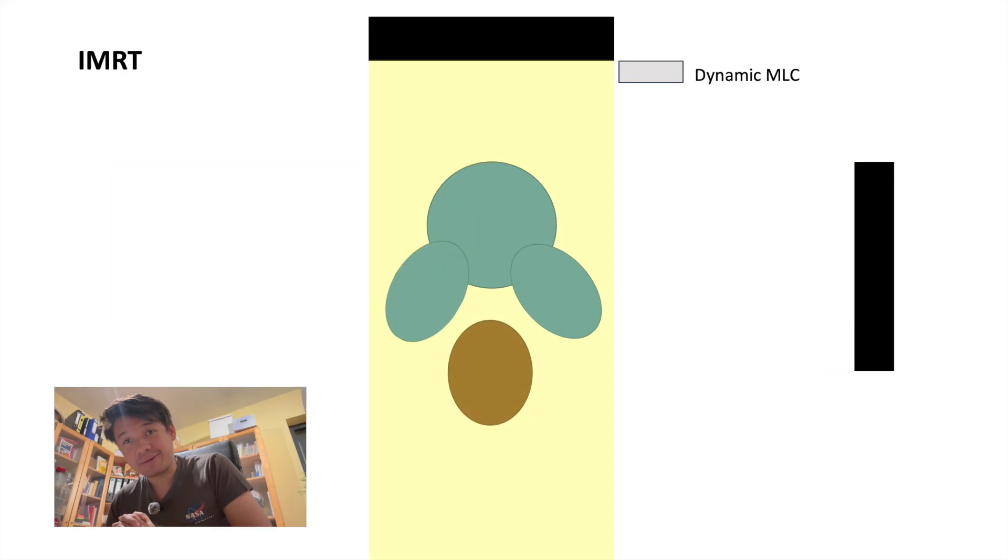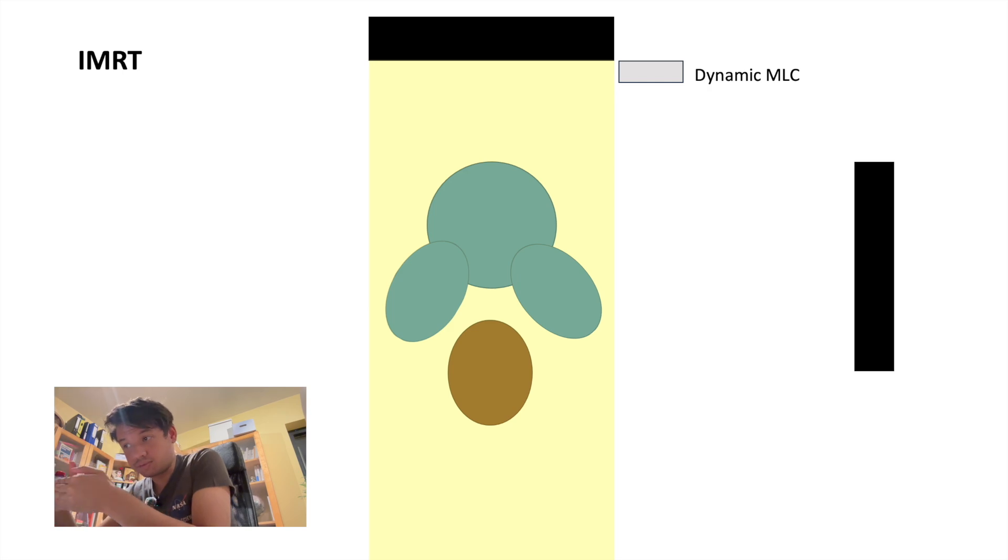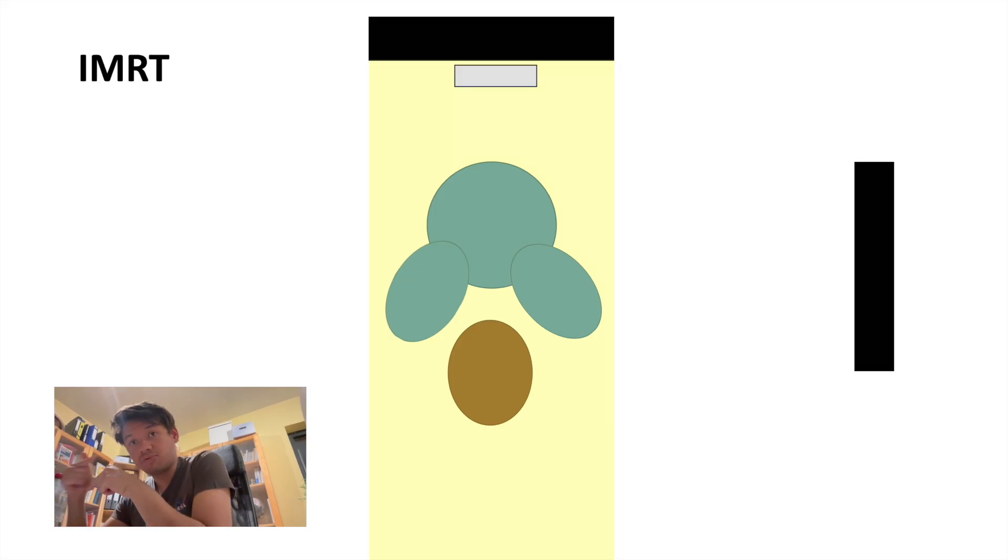In IMRT, this one is called step-and-shoot IMRT, we first turn the beam on to deliver the dose for a given MLC position. Here, we have no MLC just in front of the beam, then turn it off, and we will move the dynamic MLC to another position, and when the beam is turned on again, another segment is delivered.